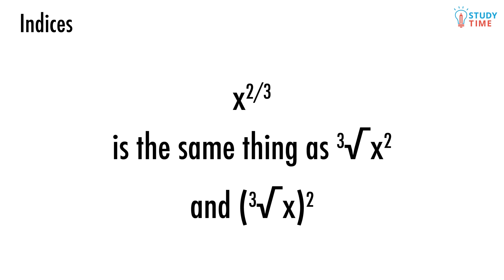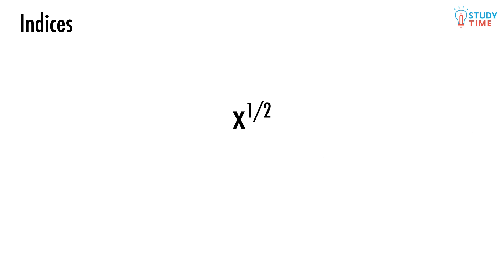Let's use this idea and look at a simpler example. How would we rewrite x to the power of 1 over 2 as something with a root in it? Well, the numerator 1 stays attached to the x, and the denominator 2 becomes the root, a square root. Which means that x to the power of 1 over 2 is the same as the square root of x.